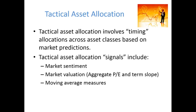Market valuation measures used in tactical asset allocation include the aggregate PE ratio and the term slope. The aggregate PE ratio is the average price-earnings ratio across the market. When this is low, it reflects that current market prices are low as a multiple of expected future earnings, and that might be considered a good period to invest because stocks are cheap and risky assets might be expected to increase in value in the future.